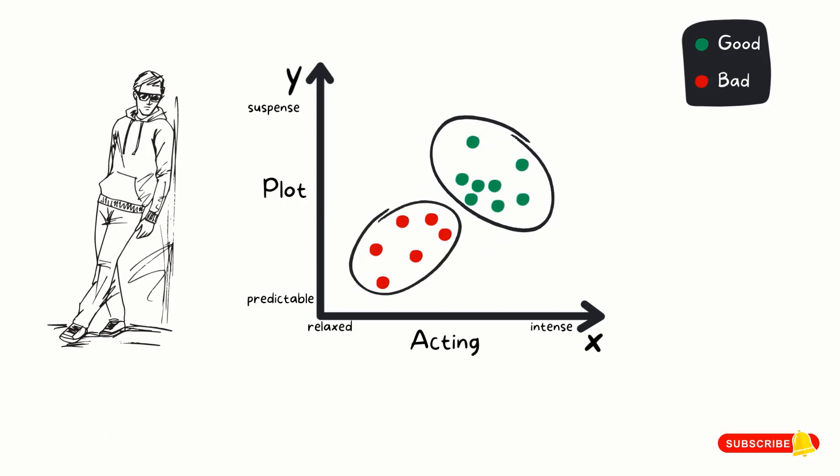Now we have known Fred's movie preference. Assume Fred watches a new movie, let's say movie 1, with intense acting and suspense. On the graph, the movie will fall around here. Looking at the data we have from Fred's past preference, can you tell if he would like or dislike movie 1? Yes, Fred likes the movie. We have been able to classify the new movie based on what we have learned from Fred's past choices.